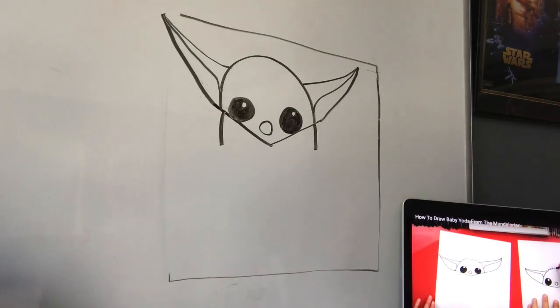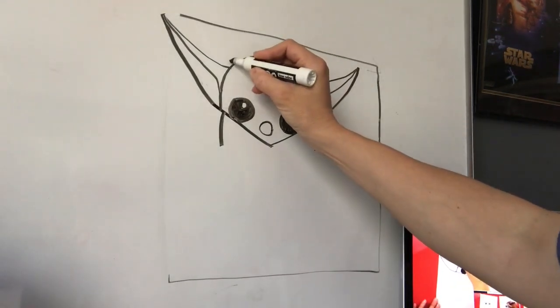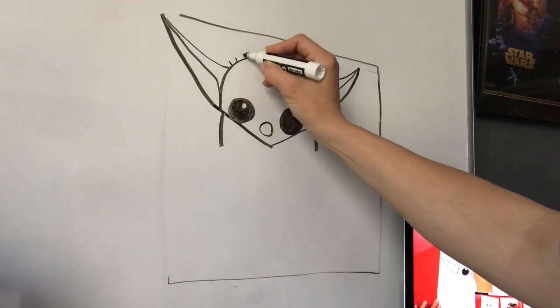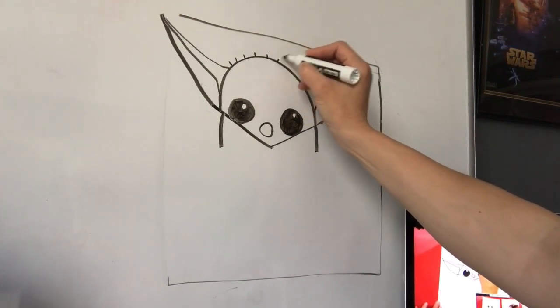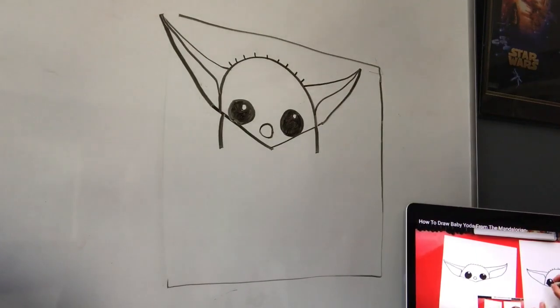Okay. We're gonna do his little hairs. So just little tiny hairs. Little tiny lines at the top of his head. As many as you'd like. Tiny little hairs.